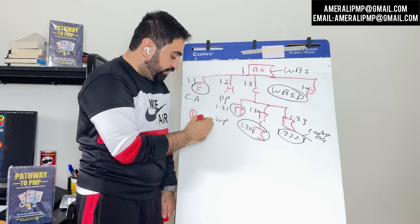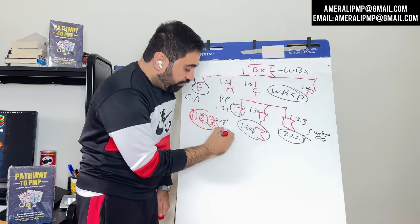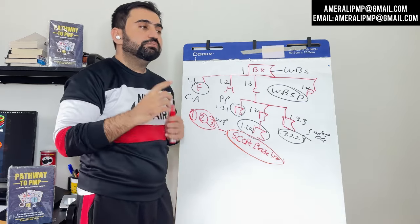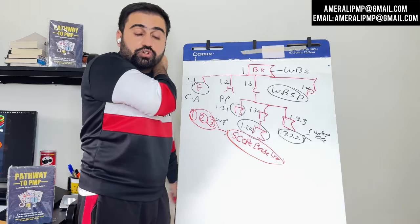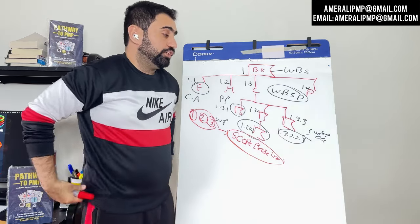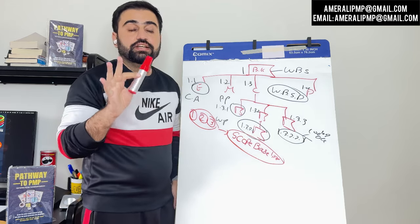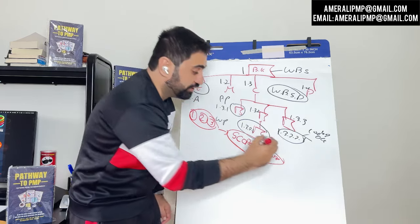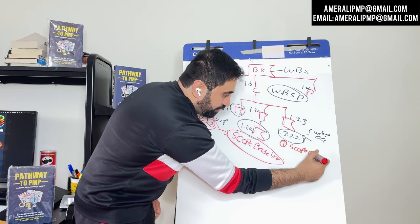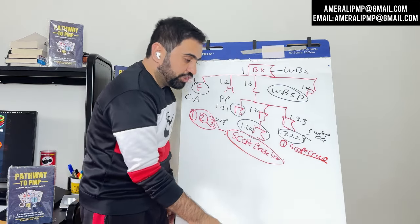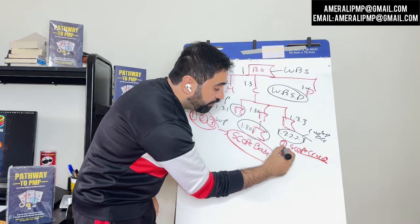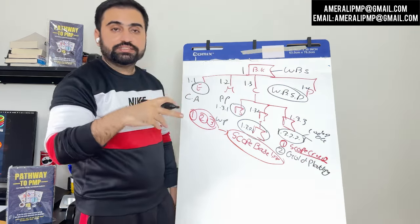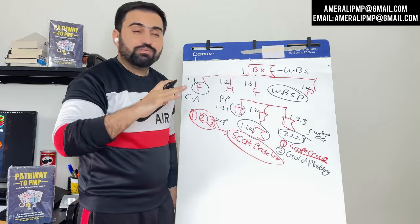So we have the project scope statement, the WBS, WBS dictionary, and code of account. Once it goes to the sponsor and is approved, it is called the scope baseline. Now the scope is fixed. If you want to change anything in the scope, it must go through a proper change control procedure. If the client tries to add anything without going through proper change control, it is called scope creep. If you as a team give more than what was in the scope baseline without it being requested, it is called gold plating. Both are not allowed.